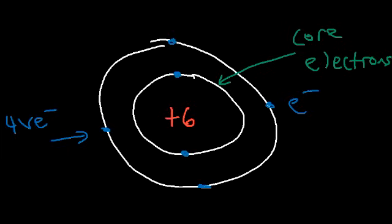If you look at where carbon is located on the periodic table, it's found in Group 4A, which is the same as Group 14. Elements in Group 4A typically have four valence electrons. Alkali metals, found in Group 1A, contain one valence electron. Alkaline earth metals in Group 2A contain two valence electrons. The halogens in Group 7A contain seven valence electrons. So you can find the number of valence electrons based on which group the element is located in.